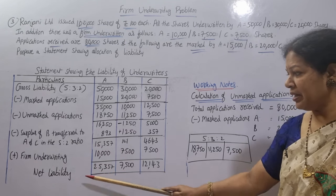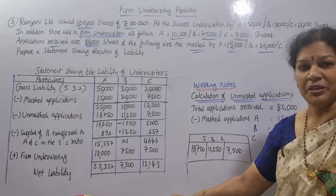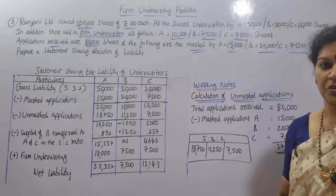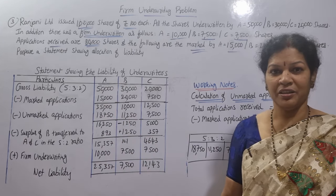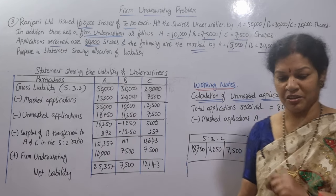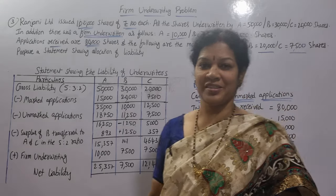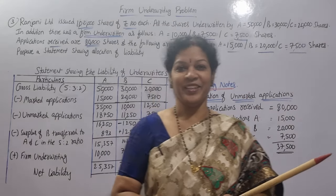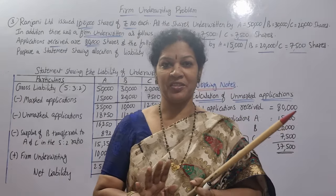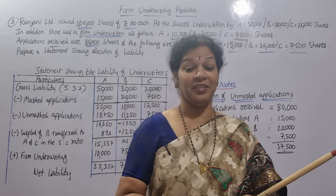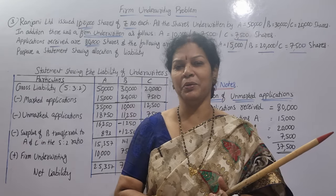So at the end of the day, the net liability of each and every underwriter is the final position. I hope it's clear — take a screenshot. Any doubts? With this, the underwriting chapter is completed. Let me know what you want next in the comment box.